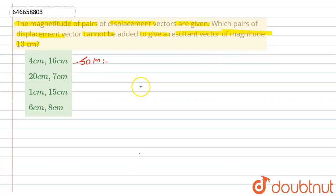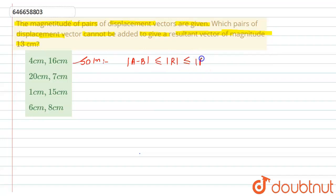For the resultant of two vectors A and B, we write the condition: the minimum value of the resultant should be |A − B|, and the maximum value of the resultant should be A + B. This is the required condition to solve this question.